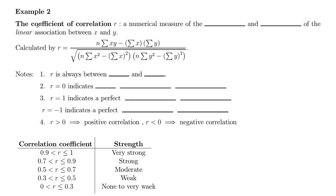And the way that we do that is using something called the coefficient of correlation, and the symbol used for that is R. This is a numerical measure of the strength and direction of the linear association between your two variables x and y.